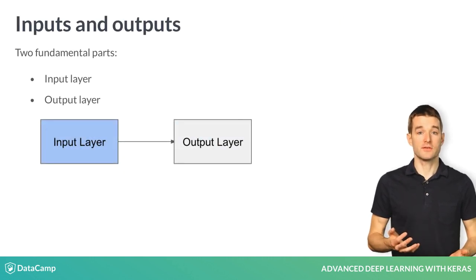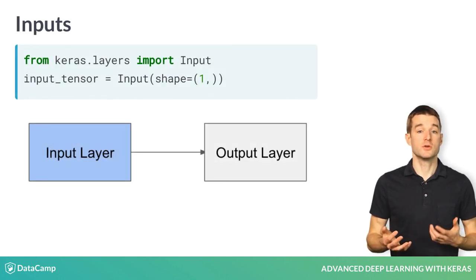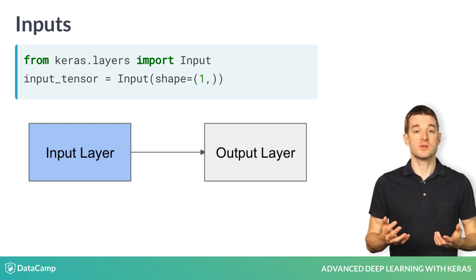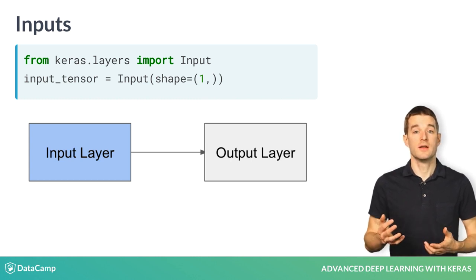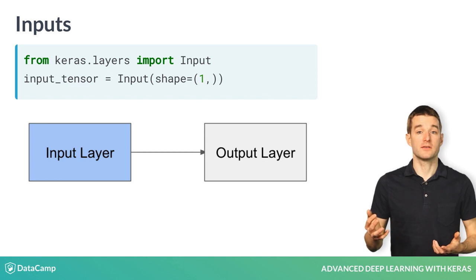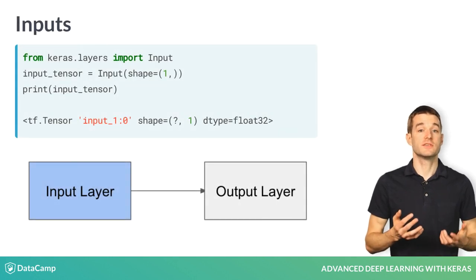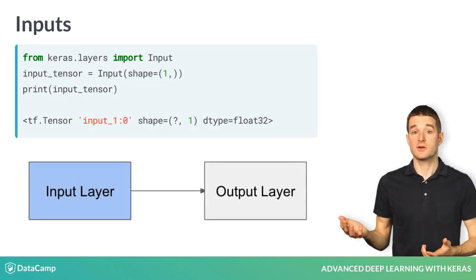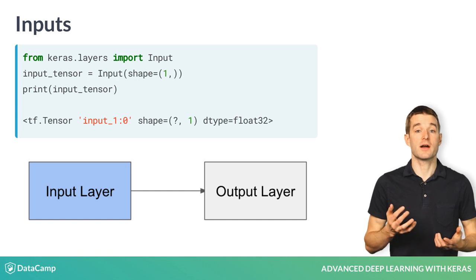Keras models, at their simplest, are fundamentally composed of two parts: an input layer and an output layer. I'll define a very simple Keras model which only expects a single input. I'll specify this using the input function from the keras.layers module. The number of columns in the input is specified using the shape parameter, which tells the model how much data to expect. Note that the shape argument expects a tuple. The input function returns a tensor, and if you print this tensor, you'll see that it is a tf.tensor object, which indicates it is ready to be used by our model as input.